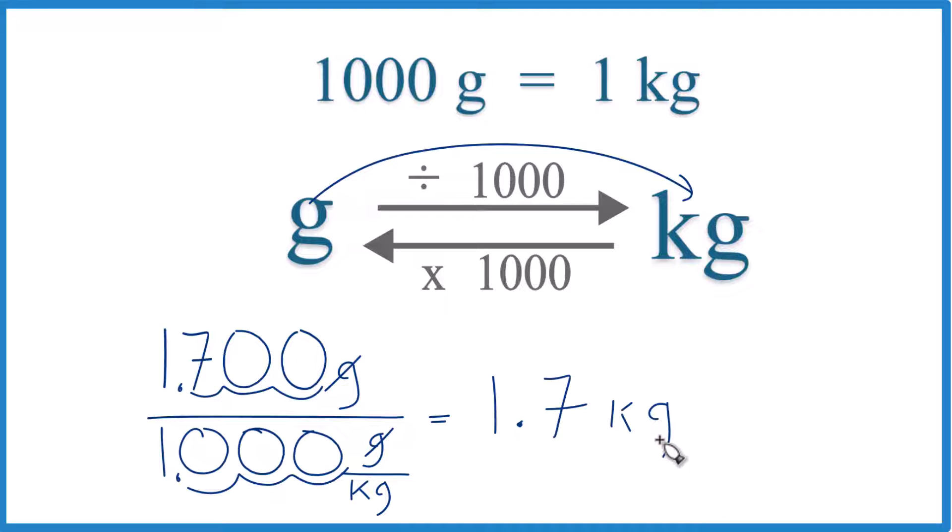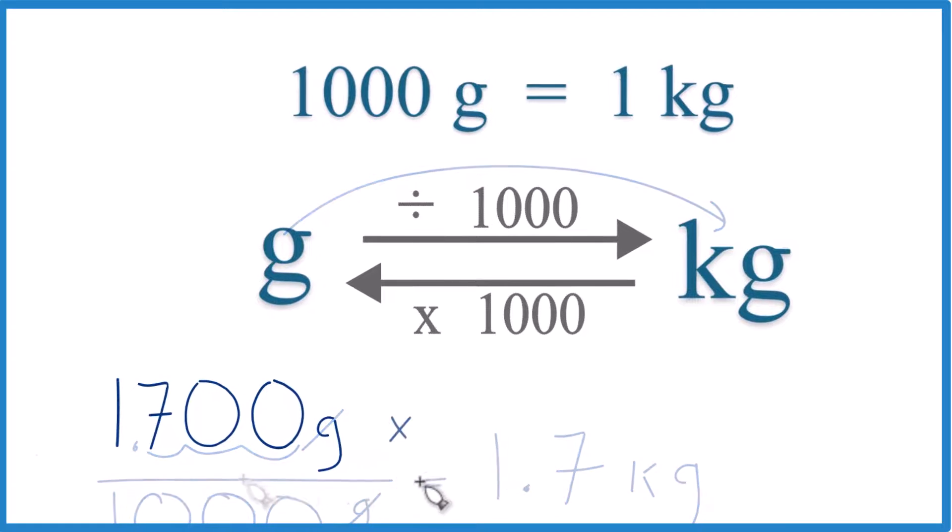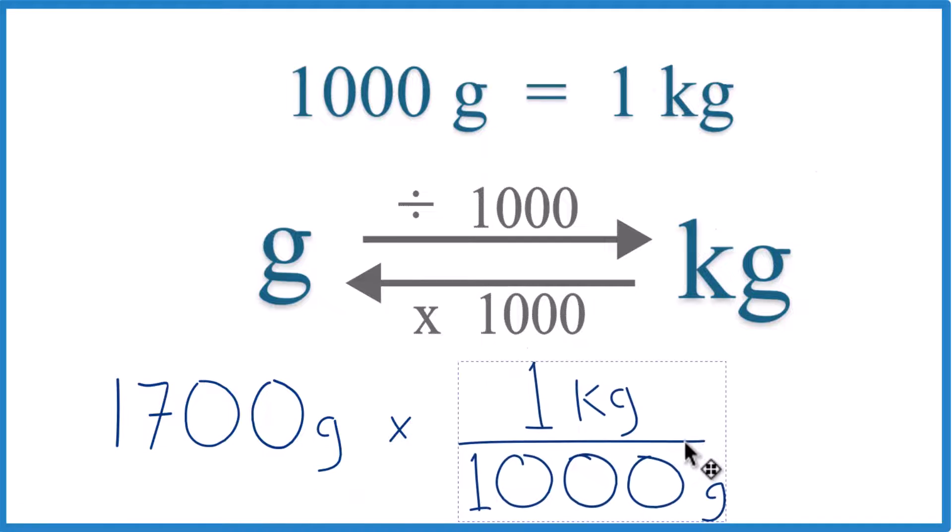Sometimes your teacher will want you to multiply by a conversion factor. It's the same idea. Let's give it a try though. So we have grams on top. We need grams on the bottom of our conversion factor so they cancel out. So we use this conversion factor: 1 kilogram per 1,000 grams. That's from up here.